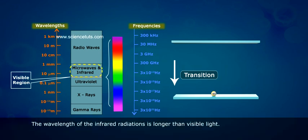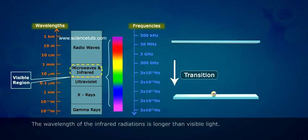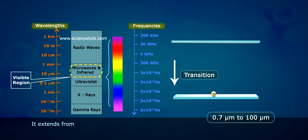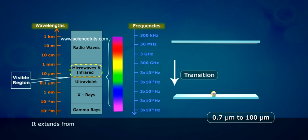The wavelength of the infrared radiations is longer than visible light. It extends from 0.7 micrometres to 100 micrometres.